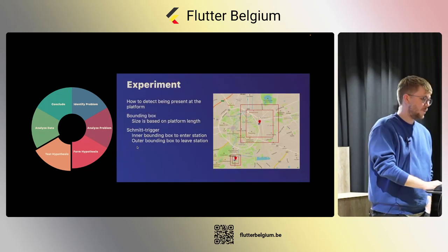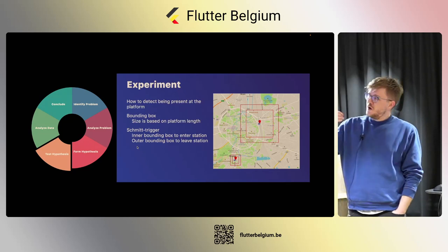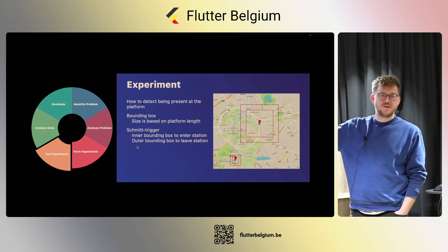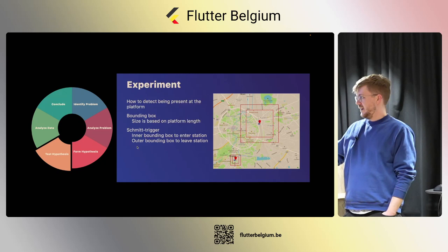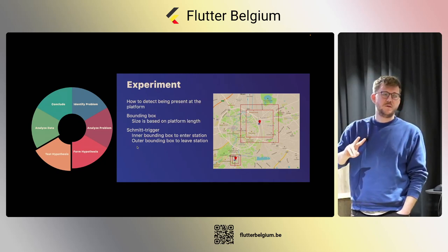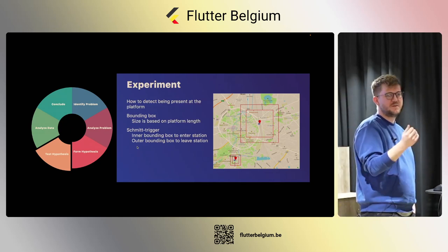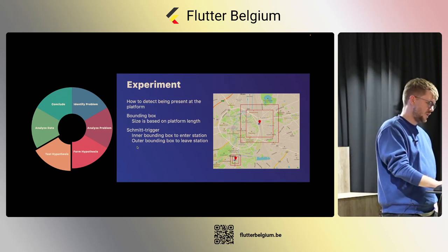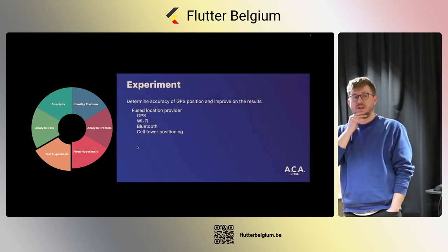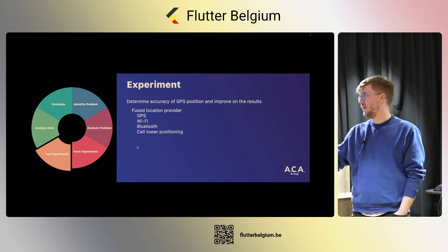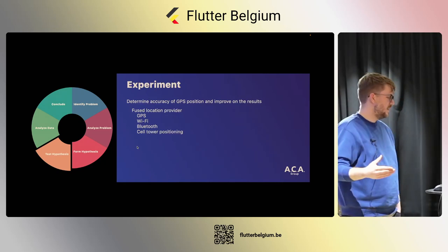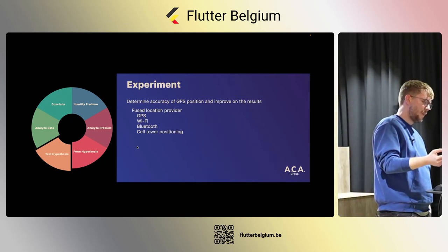We designed an experiment: how do we detect that you're present at the platform? We used bounding boxes — if you enter the bounding box, you're at the platform; if you leave it, you're outside. Around the stations you see two bounding boxes — that's a Schmitt trigger, which ensures stability when you enter or leave the region to prevent fluctuations. As we were only developing an Android application, we used the Fused Location Provider from Android, which gives a good combination of GPS and Wi-Fi out of the box.